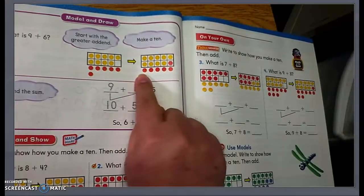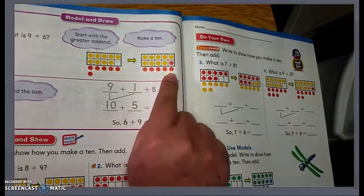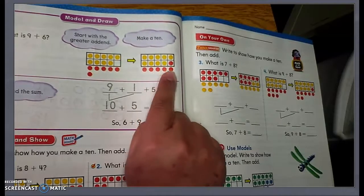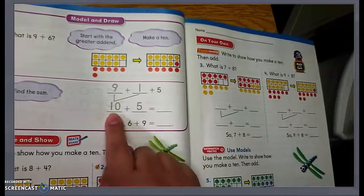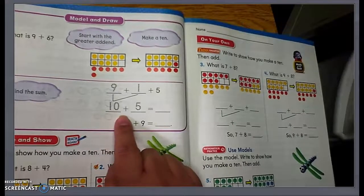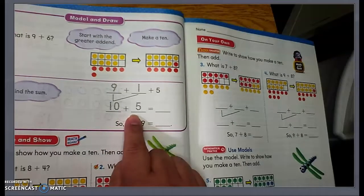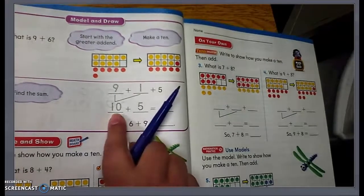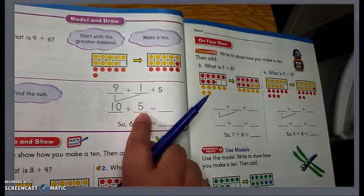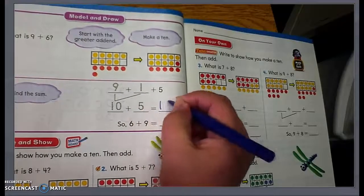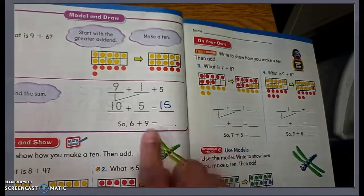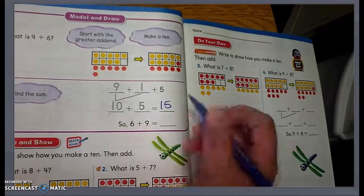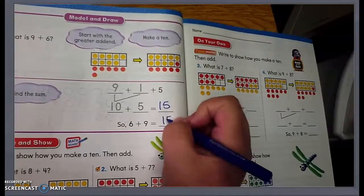So we filled in that 10 frame. Now I only have how many counters outside of the 10 frame? I have one, two, three, four, five. So if I have 10 in the 10 frame plus five, that makes it a lot easier for us to add. So 10 plus five equals 15. Therefore, six plus nine also equals 15.